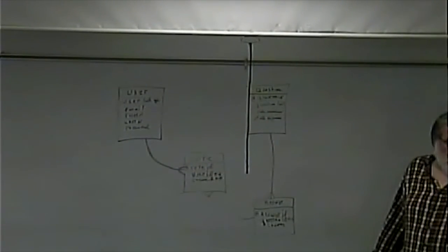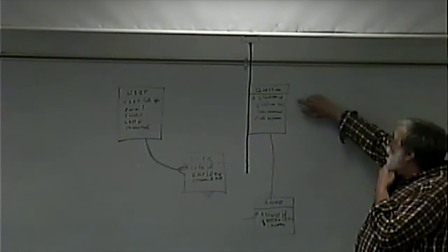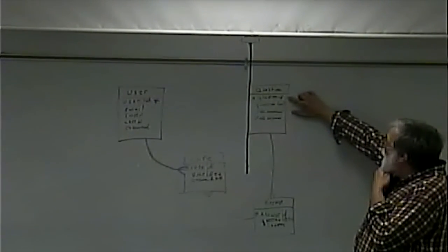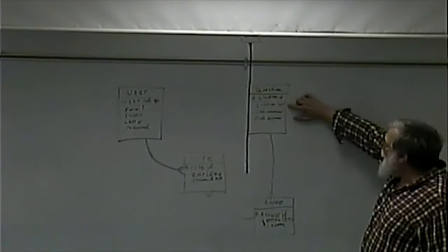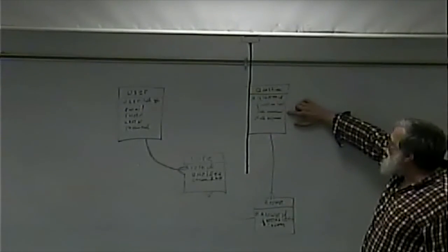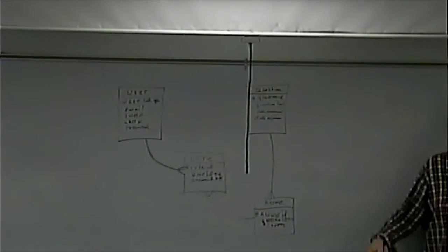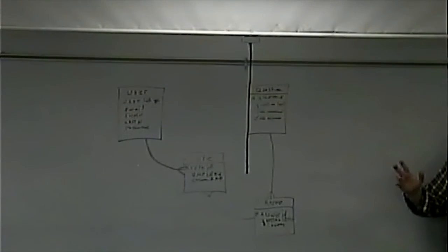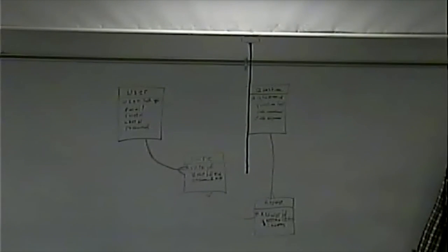Any questions? What does the question table have? Question_id, question_text, date_created, and date_expires — so I could put an expiration date to say this question is only relevant through the end of the month, and then not show it after that. Any other questions? We'll see you in lab.